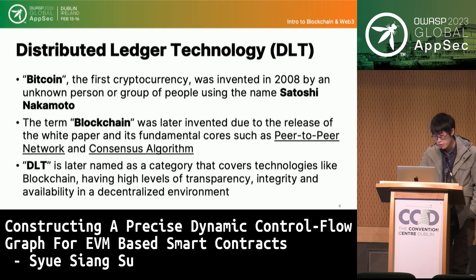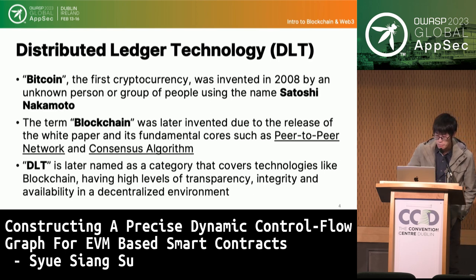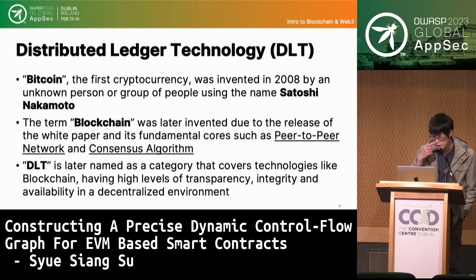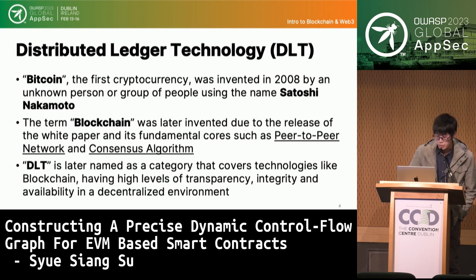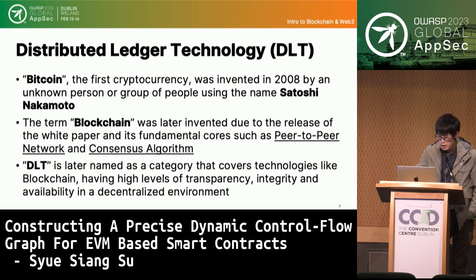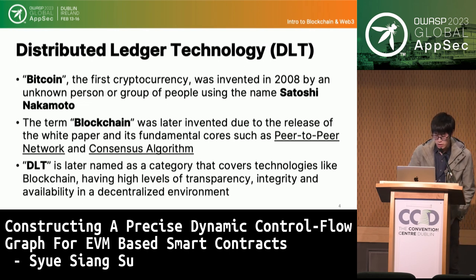Before going deeper into blockchain and Web3, we must understand what they are. The first blockchain instance most people have heard of is Bitcoin — the first cryptocurrency, invented in 2008 by an unknown person or group using the name Satoshi Nakamoto. The term blockchain emerged from that white paper, introducing concepts like peer-to-peer network and consensus algorithm. DLT covers technologies with high levels of transparency, integrity, and availability in a decentralized environment, and blockchain is one of them.